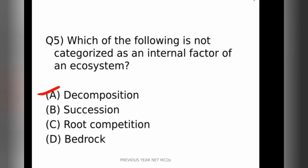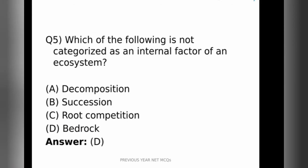So options are decomposition, succession, root competition, or the bedrock forming the rock parent material. The correct answer is the bedrock. So bedrock is not an internal factor. It is an external factor from which the soil is formed and the ecosystem runs. But decomposition, succession and root competition are all coming under internal factor of any ecosystem.